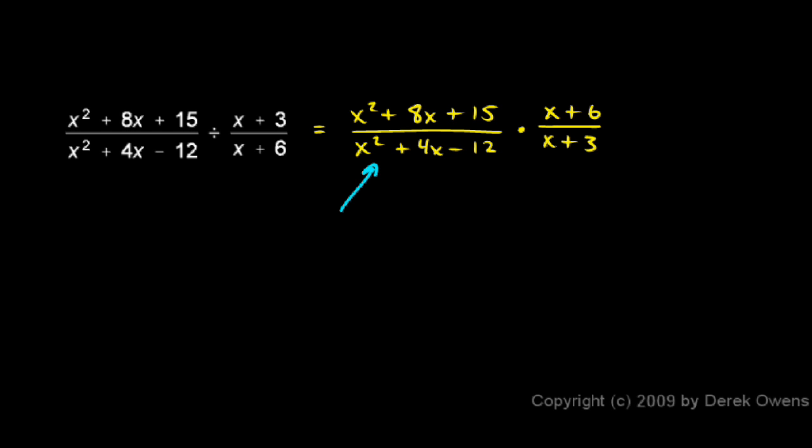Now let's look at this first fraction. Those are both trinomials, the numerator and the denominator, and trinomials can often factor. So let's rewrite these with those trinomials in factored form. x squared plus 8x plus 15 factors like this: x plus 3 times x plus 5.